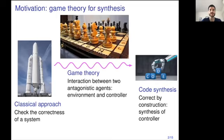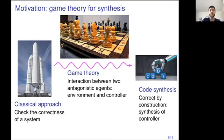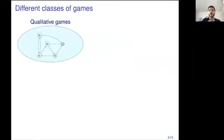First, let me give you a word of context. Our motivation is to use game theory for synthesis. In the classical approach, we check the correctness of the system — we verify it against a given specification. By using game theory, what we want is to model the system as an interaction between two antagonistic agents, the environment and the controller. The controller represents what we want to achieve, and code synthesis then automatically synthesizes a controller that will be correct by construction and a valid model for our system. In this context, there are different classes of games to study, depending on the specification we want to achieve.